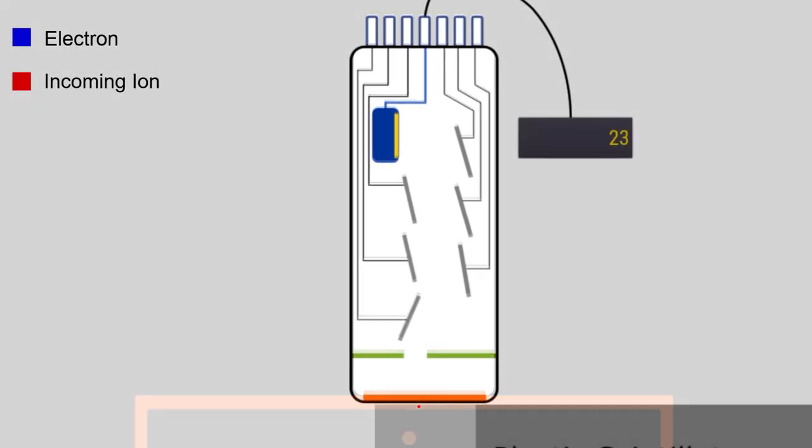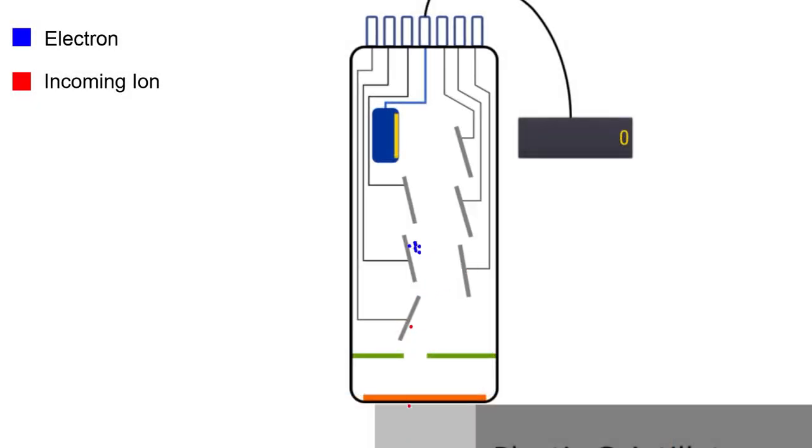This detector works in the following way. When an ion hits a sensor in the detector, it knocks off secondary electrons.